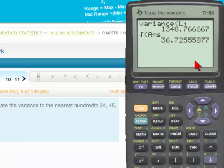So, that's how to use the TI-83 to find the variance and the standard deviation for any list of data.